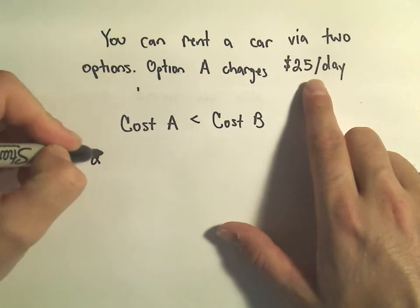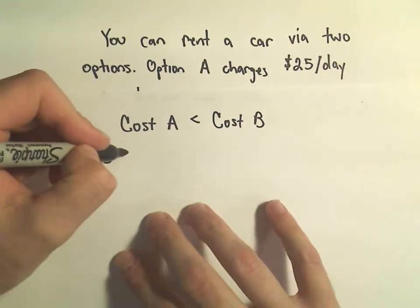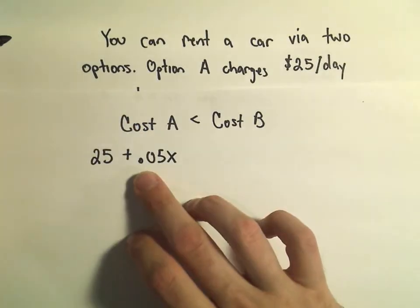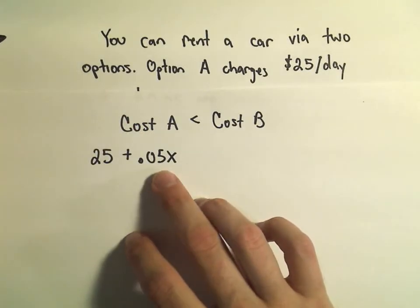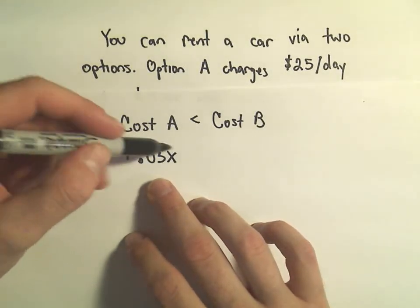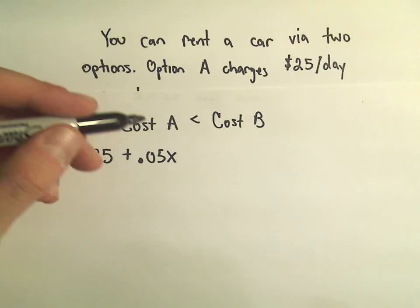Well, you've got to pay that initial $25 plus you pay $0.05 per mile. So we'll just take 0.05 times X, and that'll give us the total cost incurred by driving X miles.